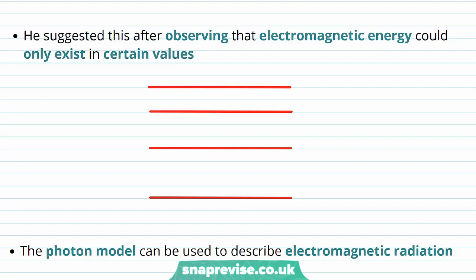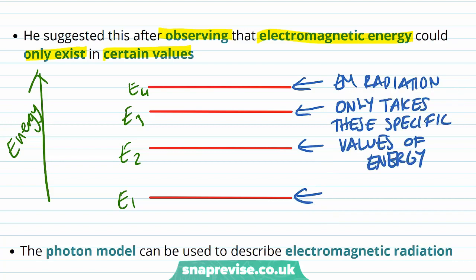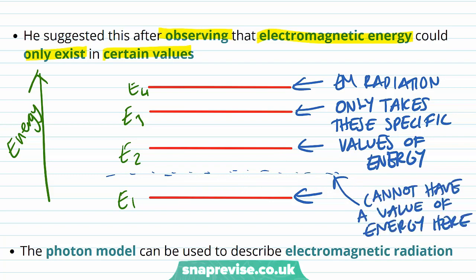Planck suggested this after observing that electromagnetic energy could only exist in certain values. If each of these lines represents a certain value for energy, Planck observed that electromagnetic radiation could only take these specific values of energy — not any arbitrary value in between.